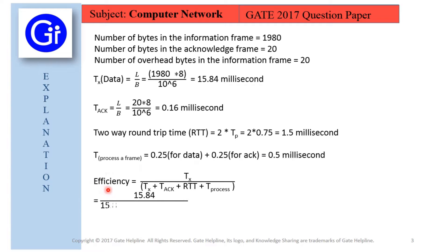The formula for efficiency is Tx upon Tx plus Tack plus RTT plus Tprocess, which evaluates to 15.84 upon 15.84 plus 0.16 plus 1.5 plus 0.5, which equals 0.88, and in percentage it equals 88%.